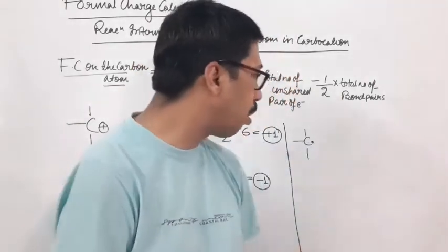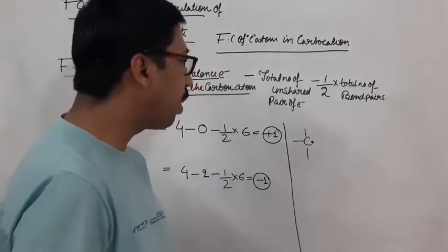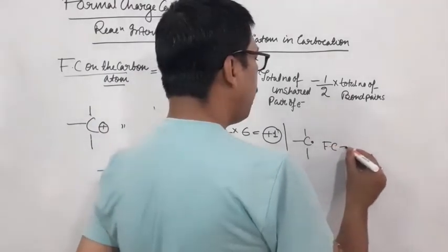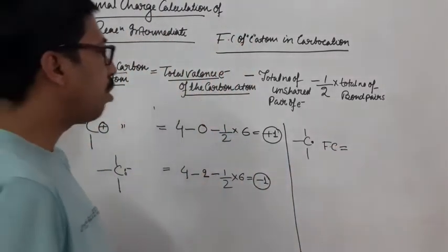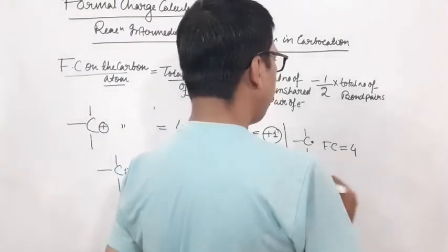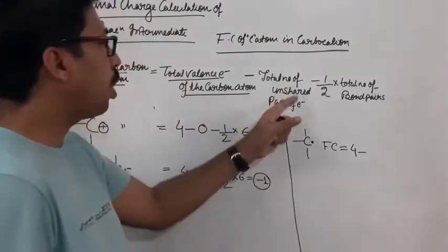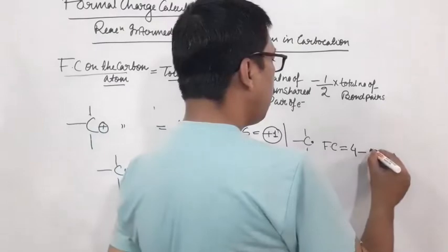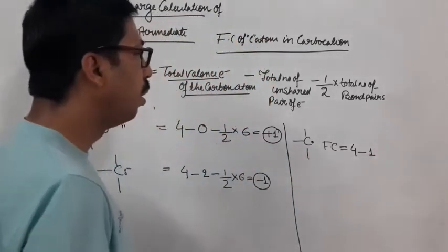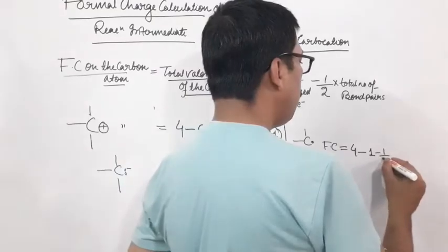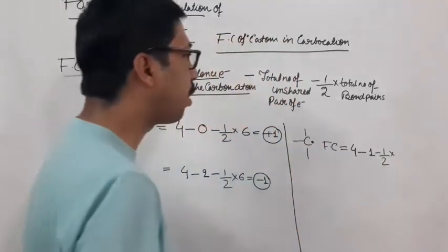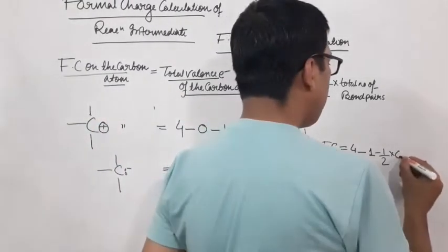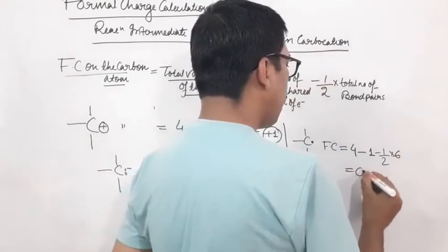Which is responsible for instability. So this is total electrons minus total number of unshared electrons. This electron here, one minus the bond pair electrons, six electrons. This is zero.